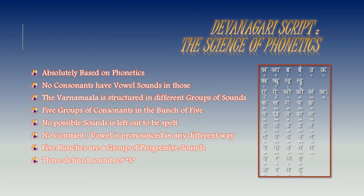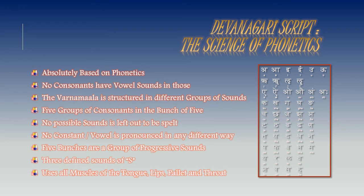Another special thing about Devanagari is that there are three defined sounds of S. Sa which has a knot in the beginning, pronounced with the tongue and the front part of the palate. Then there is Sa which is tongue with the throat. And there is Sa which is tongue and teeth. These defined sounds of S you won't find anywhere else. The script uses all muscles of tongue, lips, palate, and throat, and hence doesn't limit our ability to make sounds when we speak.